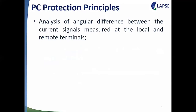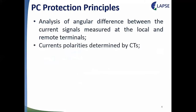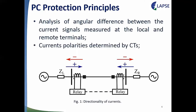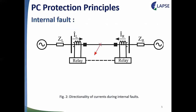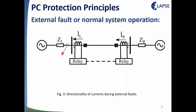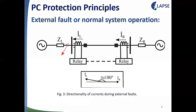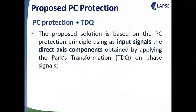The PC protection principles are based on analysis of angular differences between the current signals at the local and remote terminals of a given transmission line. Polarities are determined by the CTs (current transformers), so current entering the line is positive and current leaving the line is negative. For an internal fault, both local and remote currents are entering the line, so the angular difference is ideally zero, but in real cases almost zero due to the lag caused by capacitive effects. For an external fault or normal system operation, one current enters and the other leaves, so they are ideally in counter phase — approximately 180 degrees apart. These angular differences characterize internal versus external faults.